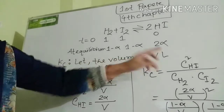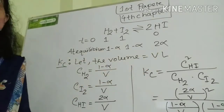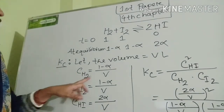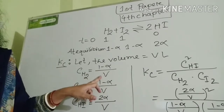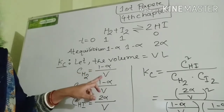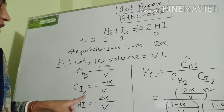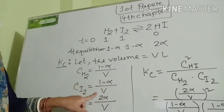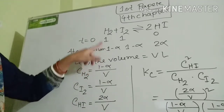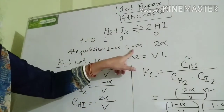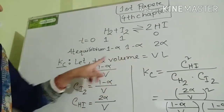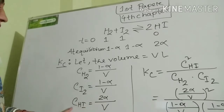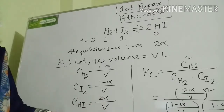Let the volume equal to V liters. The molar concentration of H₂ equals (one minus alpha) divided by V, since molar concentration equals mole number divided by volume. Similarly, molar concentration of I₂ equals (one minus alpha) divided by V, because at equilibrium the mole number of iodine is one minus alpha and the volume is V. The molar concentration of HI equals two alpha divided by V.